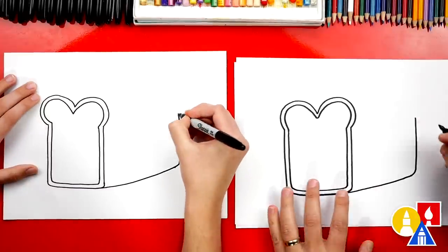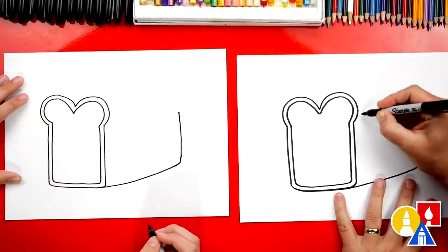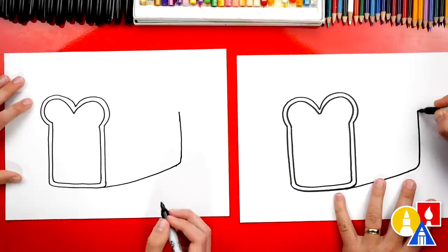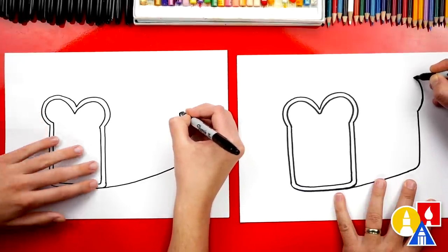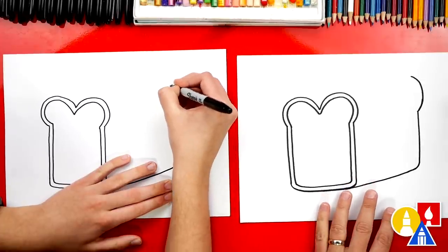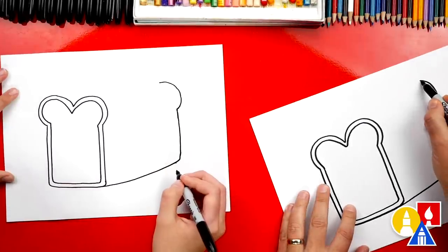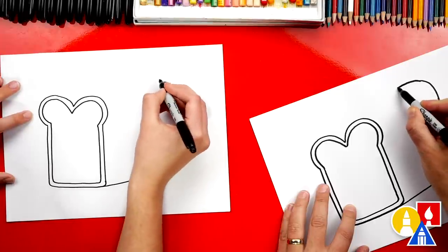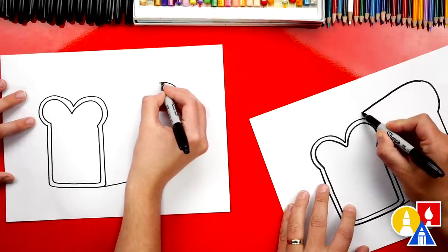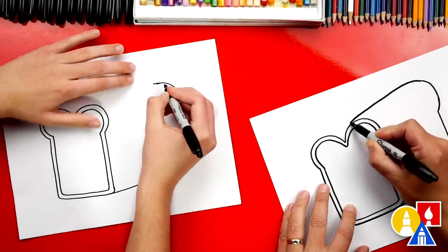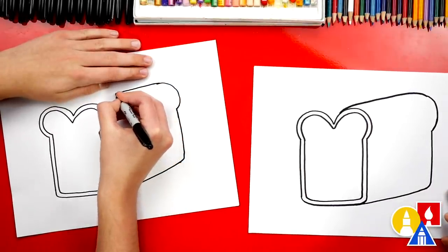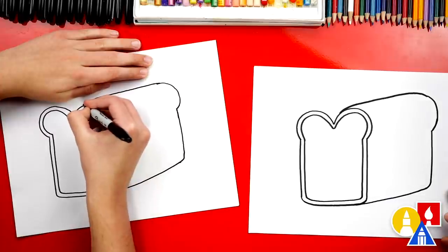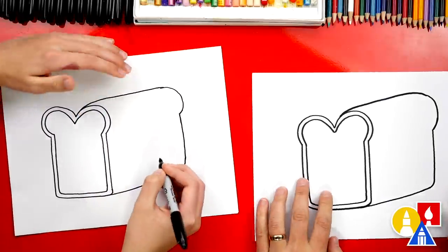You got it. All right, then we're gonna draw a backwards C shape that matches over here on the front. Next, let's continue that curve coming around like this and then come right towards this shape right here and we'll connect it in.